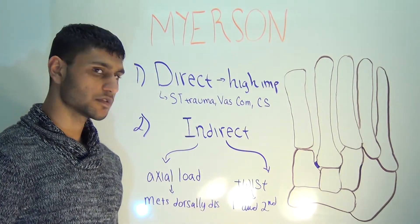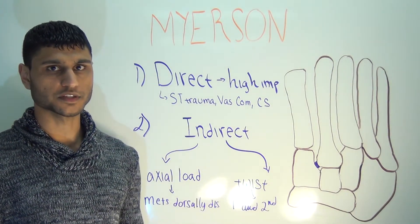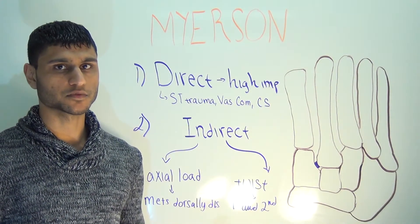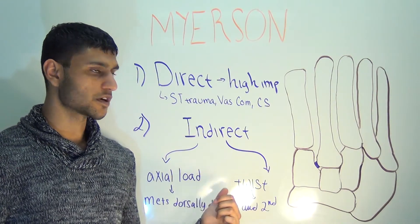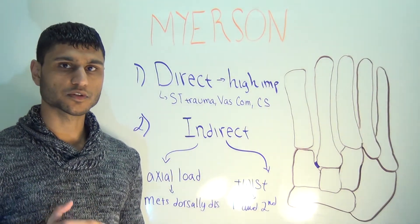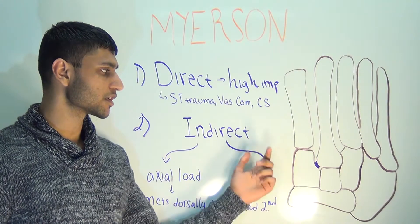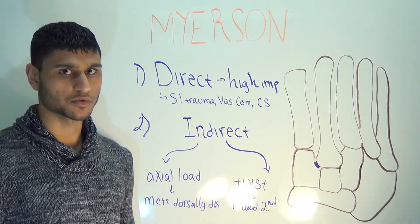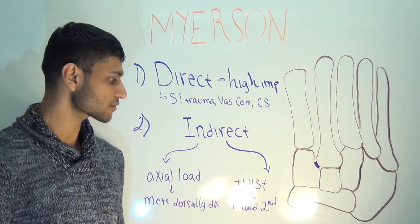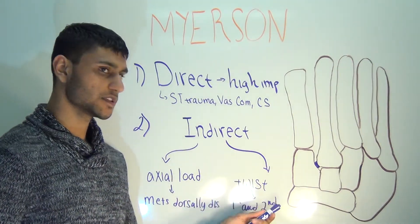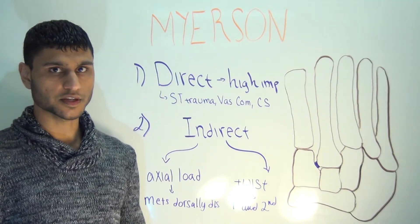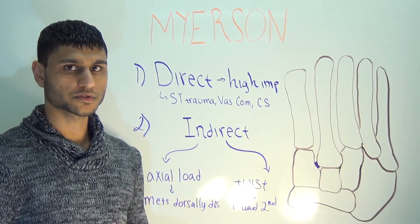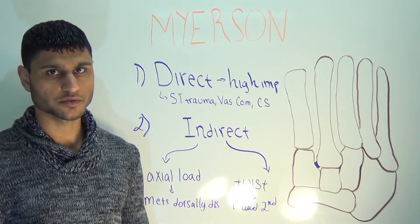Axial loading results in dorsal displacement of the metatarsal bases. This makes sense because the weakest component of the tarsal-metatarsal ligaments is the dorsal component, so the dorsal capsule gives first and the metatarsal bases displace in that direction. In the twisting type of injury, the foot is often pronated at the time of injury and the forefoot is forcefully abducted, or laterally rotated.